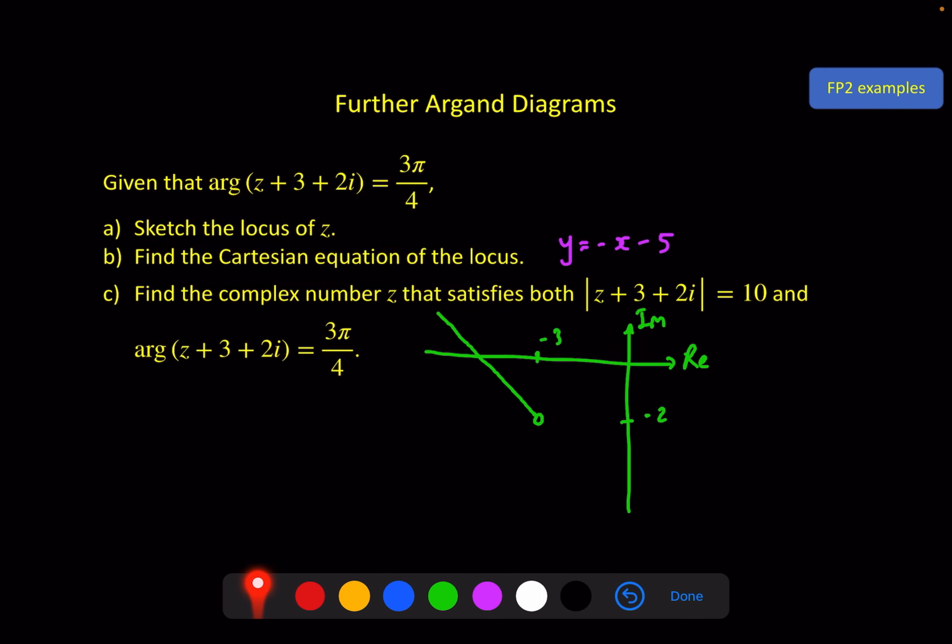Let me stress as well that this is not quite finished. This is a full line, we need a half line, so we need to state that x must be less than -3. And again, because this point is not included, this needs to be a strict inequality. This is the final answer for part b.